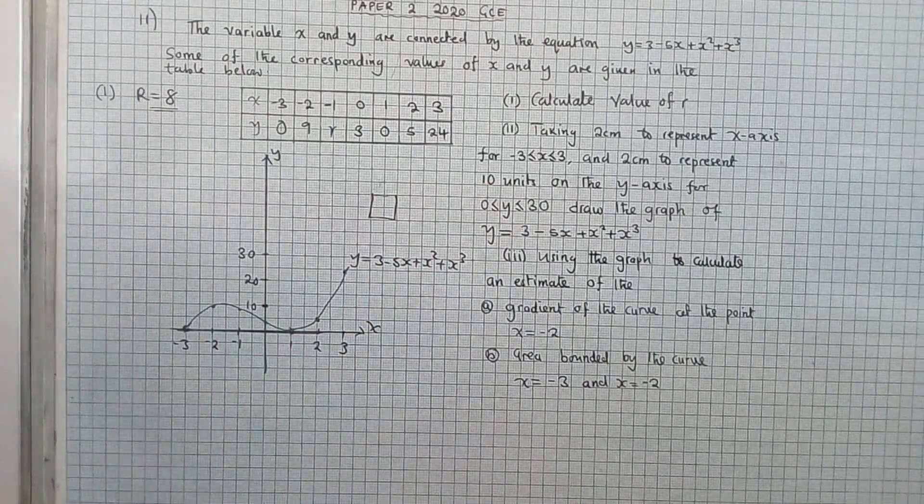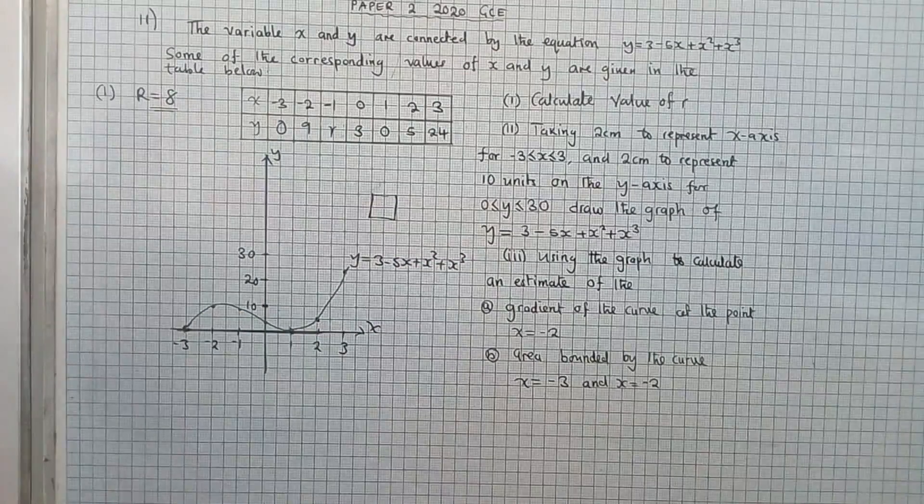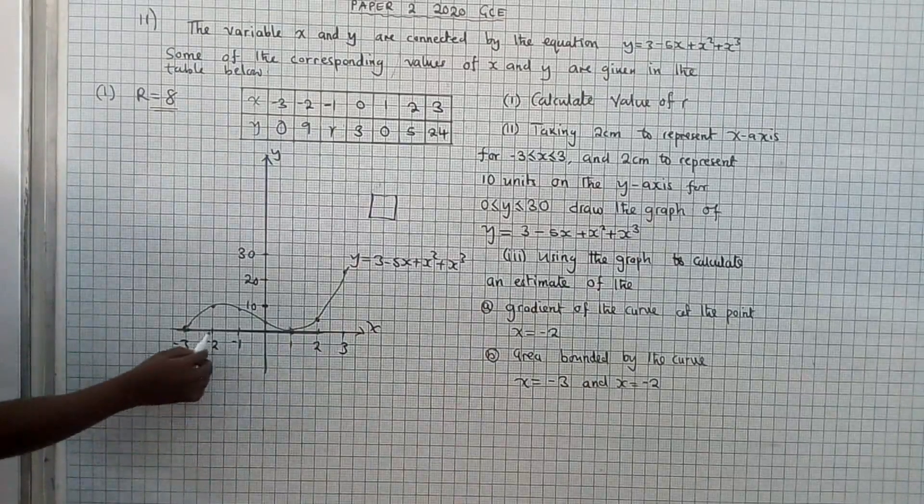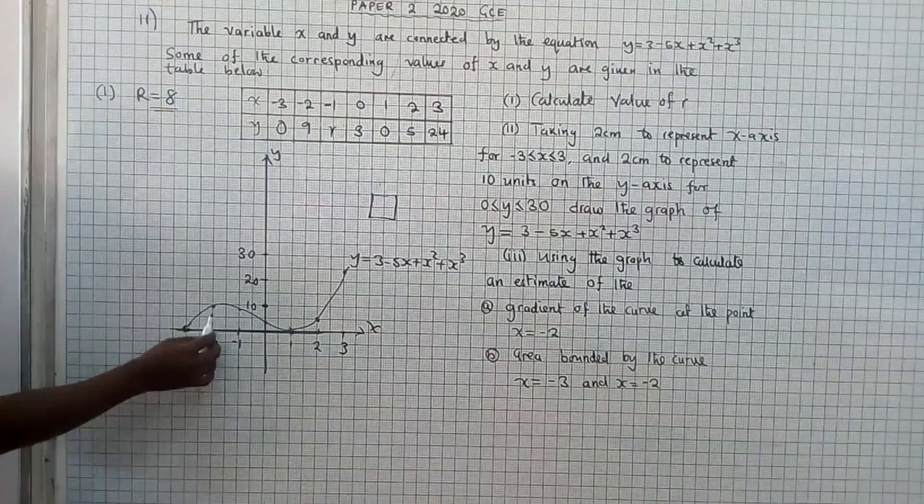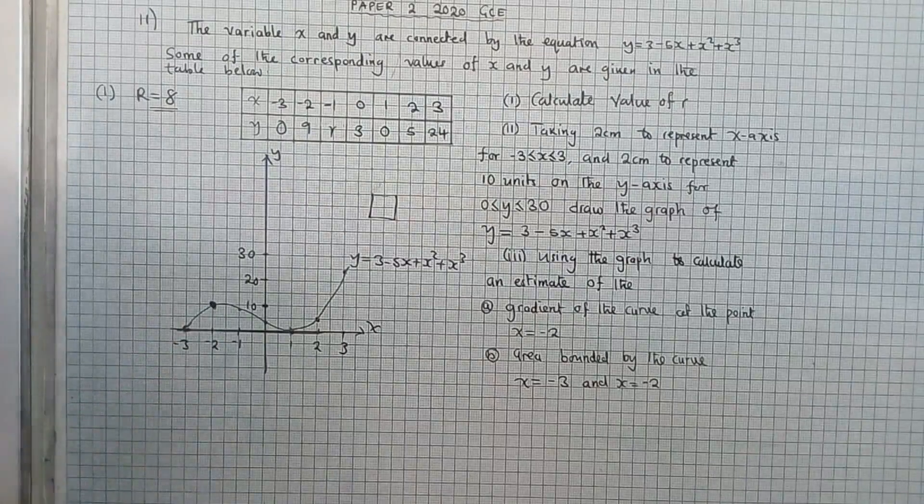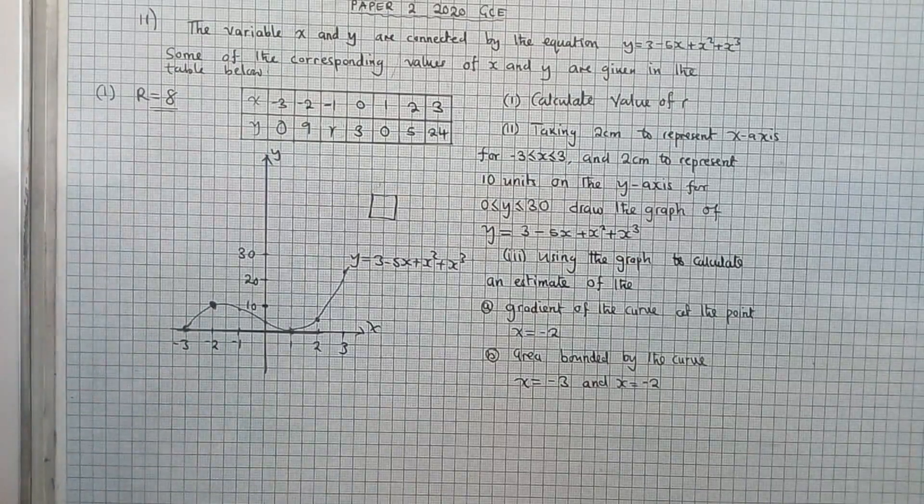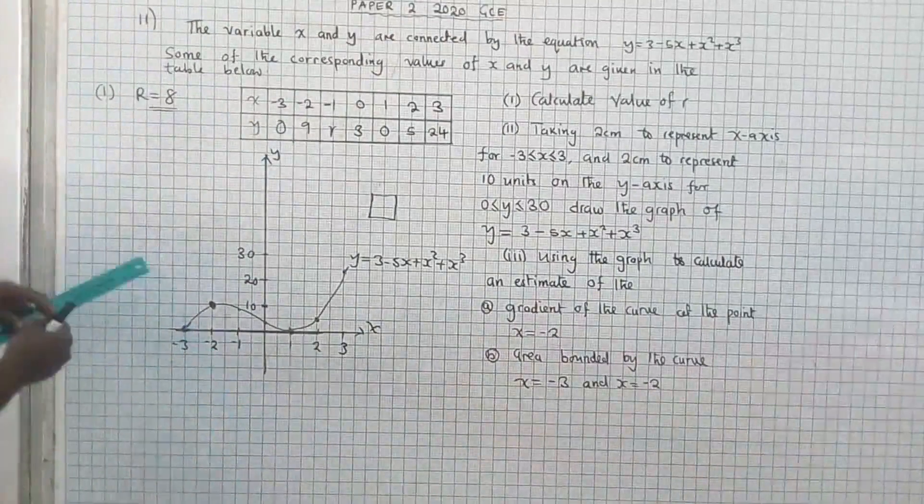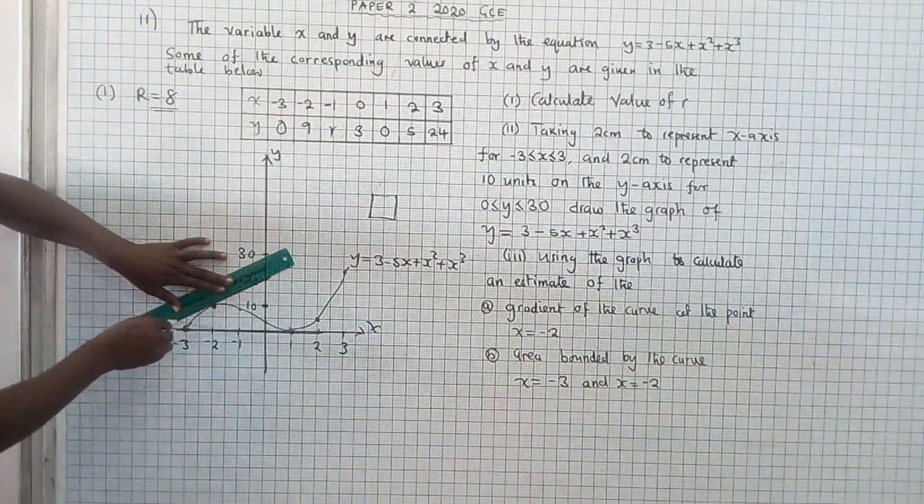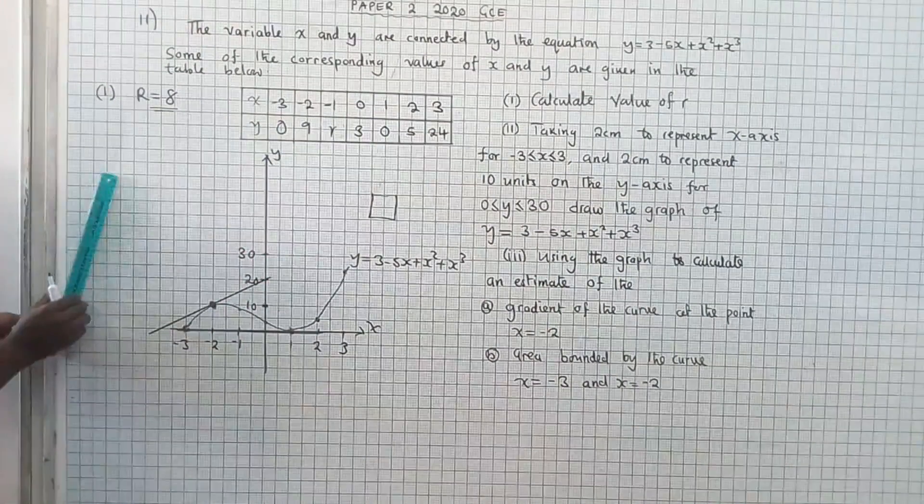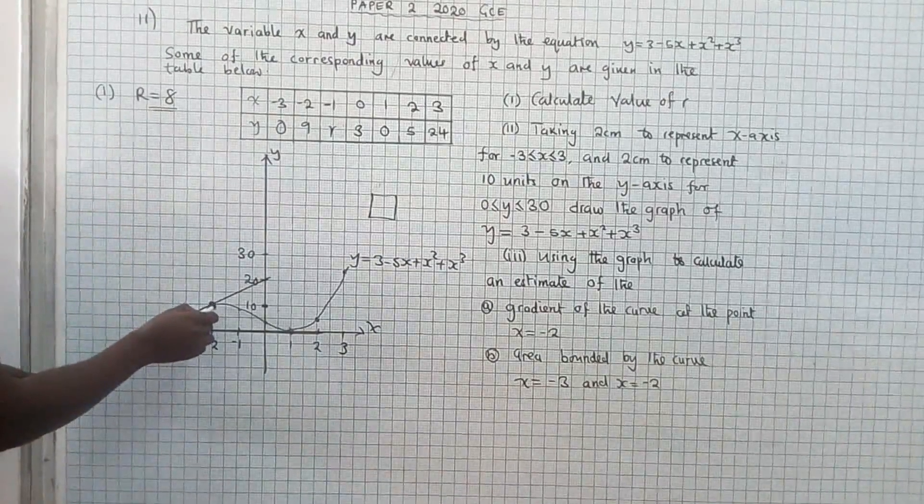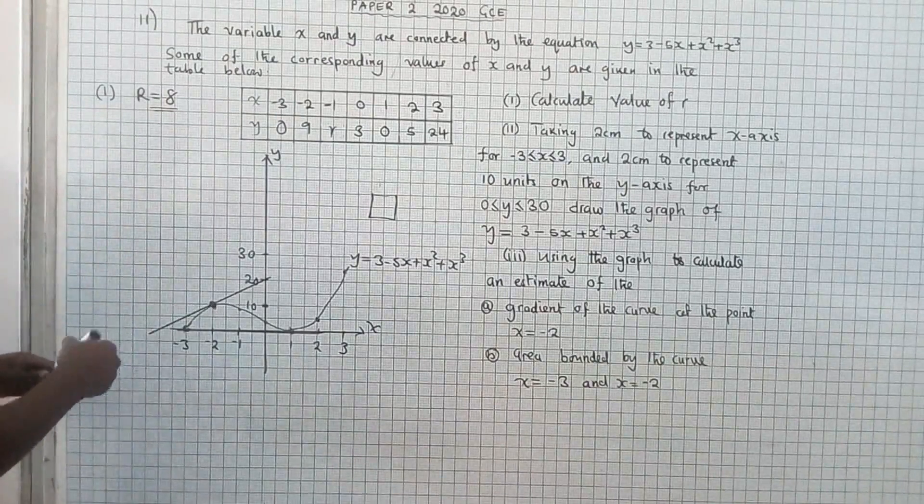We now go to question 3. We're asking us to find the gradient of the curve at the point x is equal to negative 2. We check. Negative 2 is over here. We check. This is where it's located. The graph. So you get your ruler. Put it there. Let the gradient line pass on top of the point, not along the curve. On top of the point, or top of the curve at this point. Let it just touch the curve at this point.